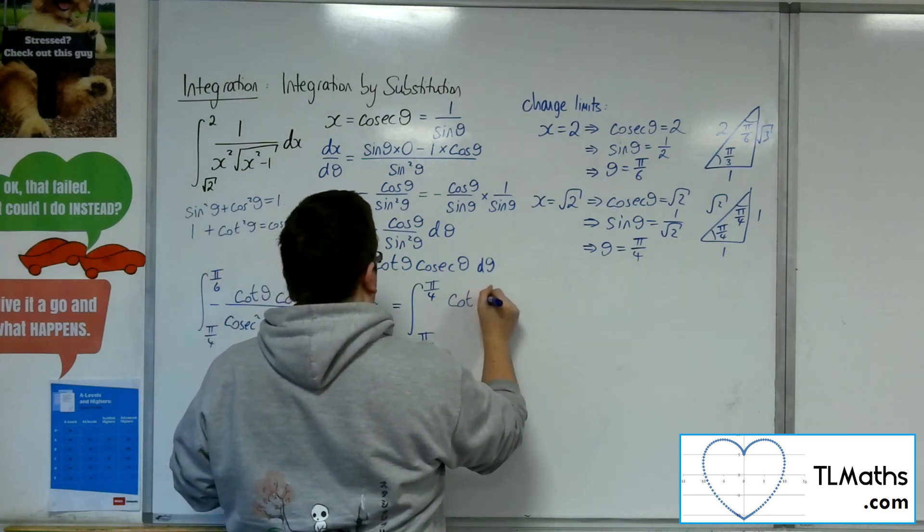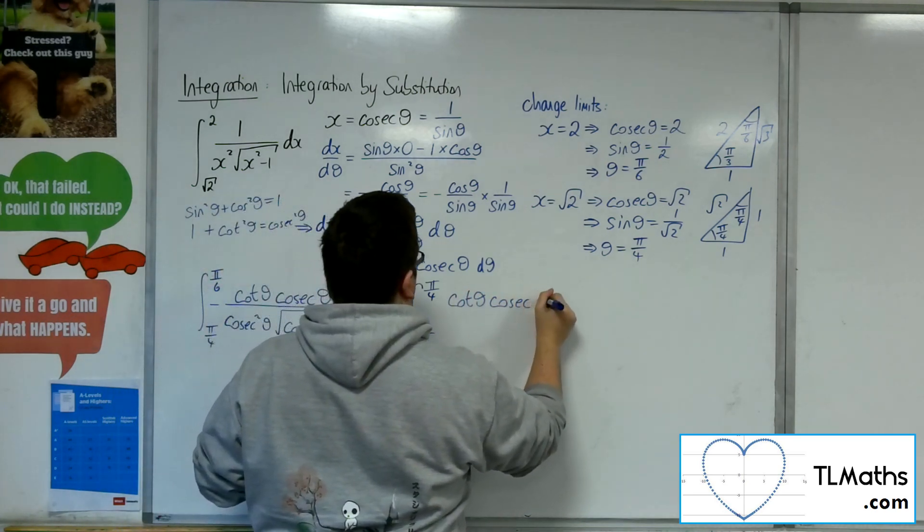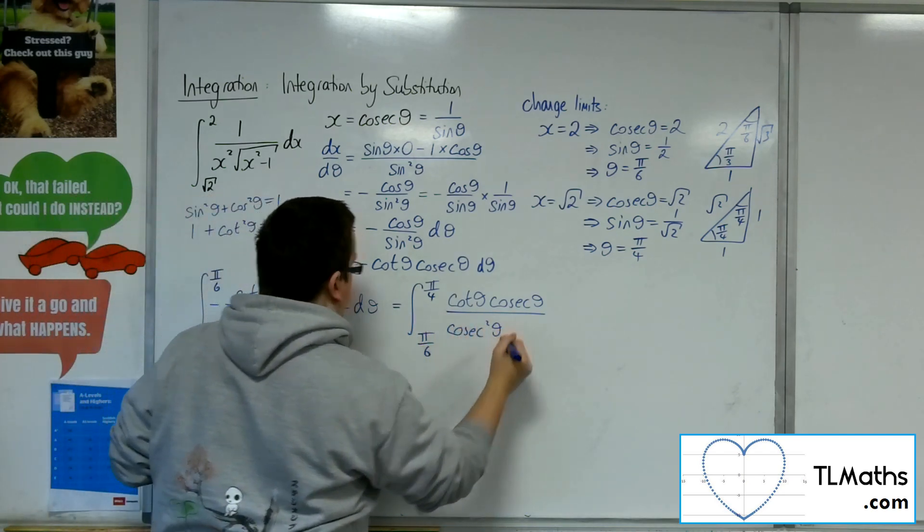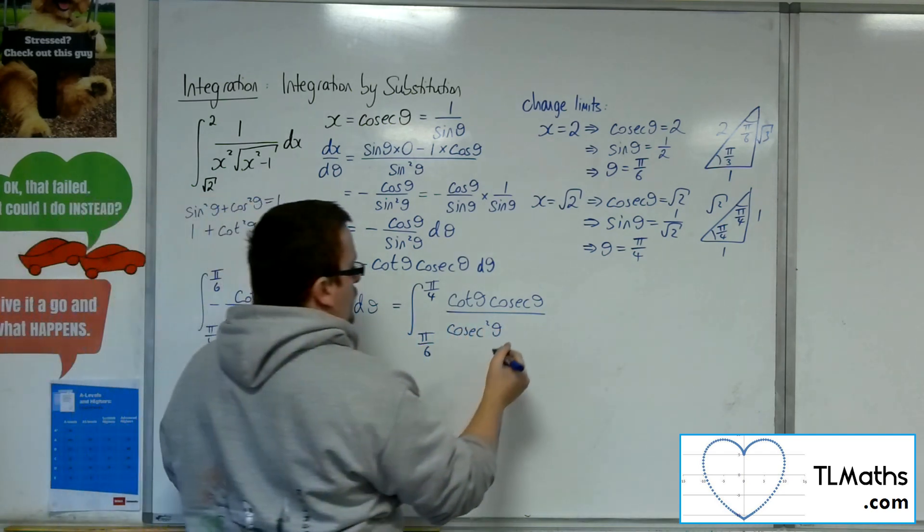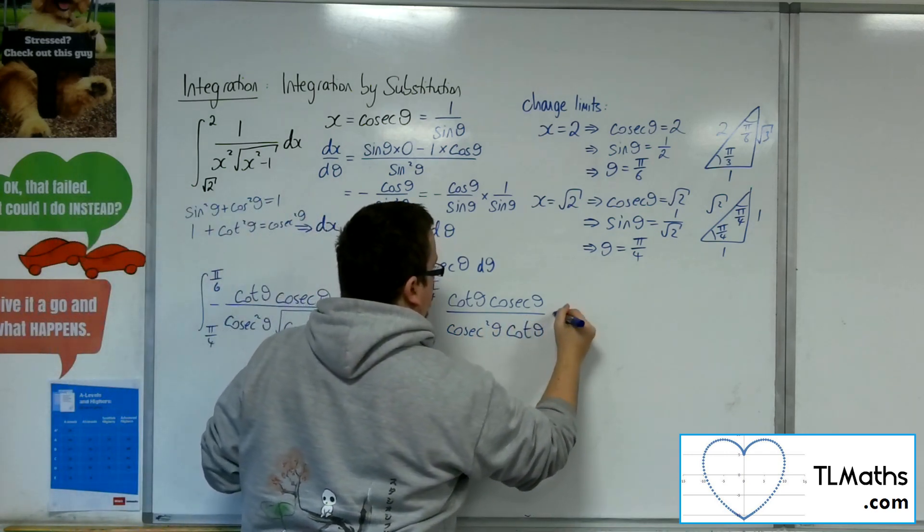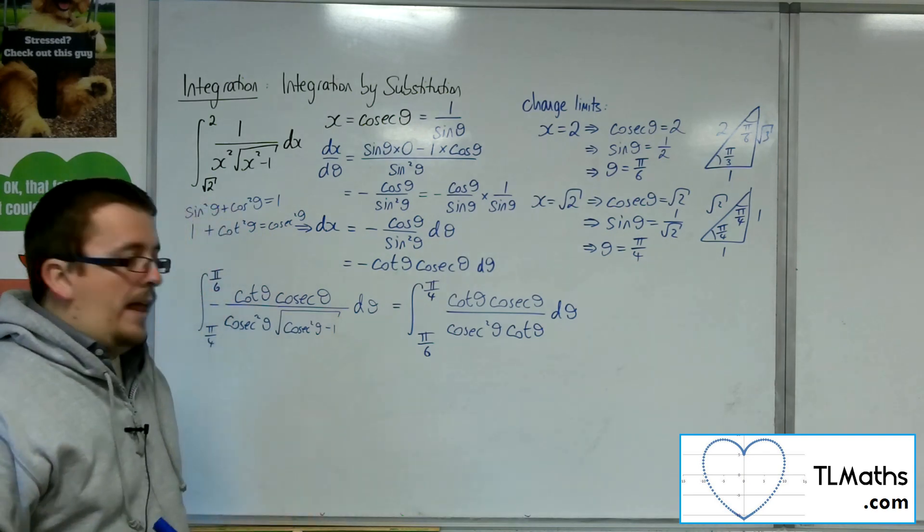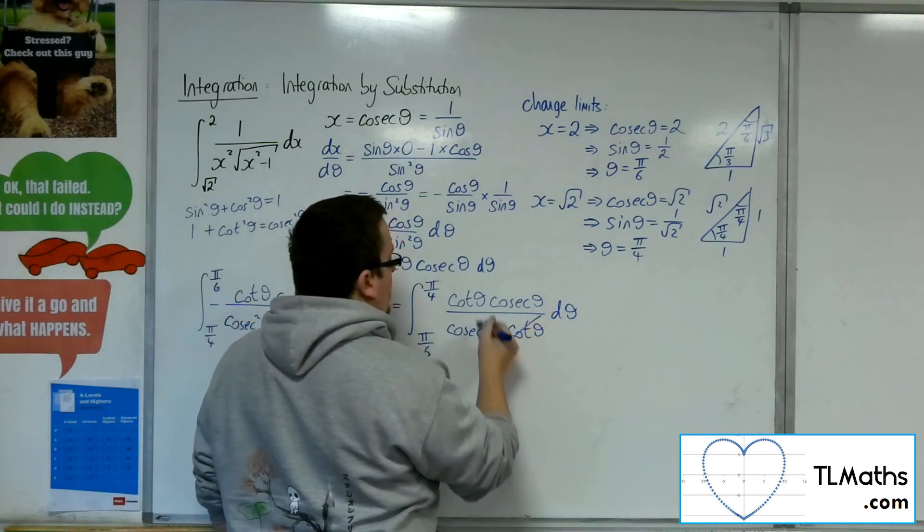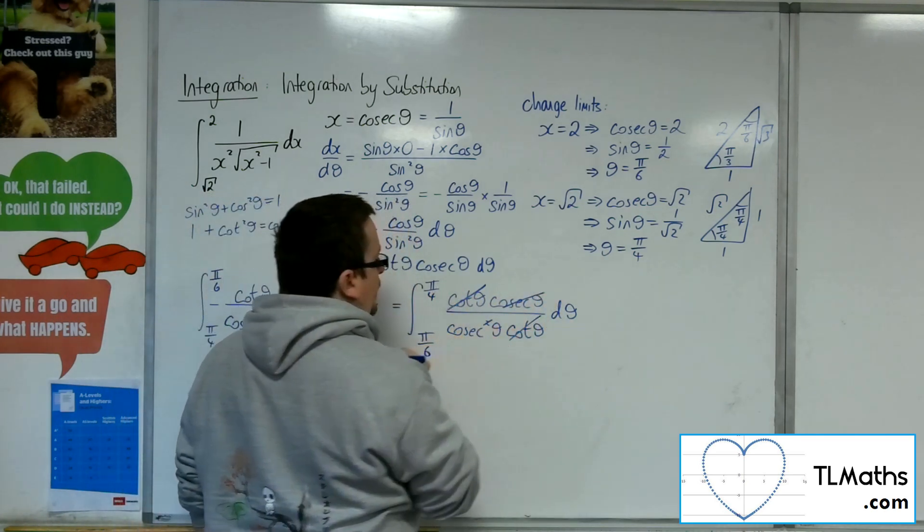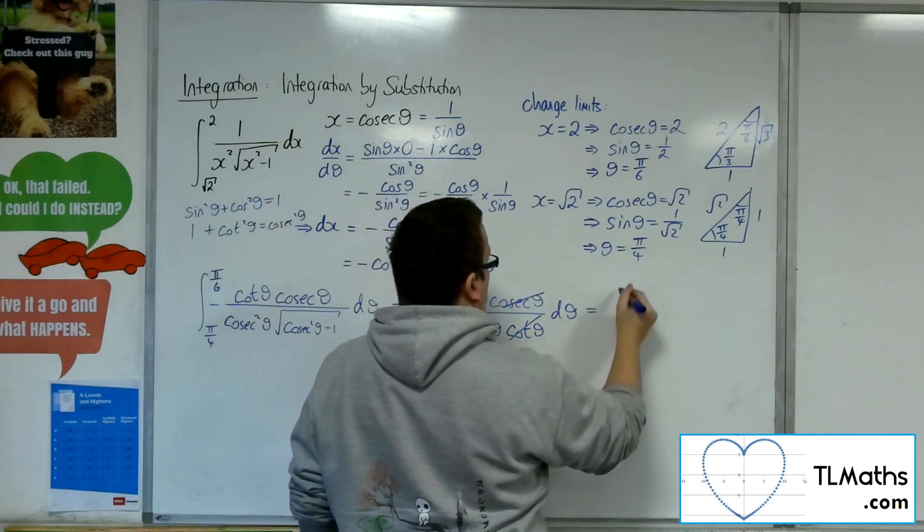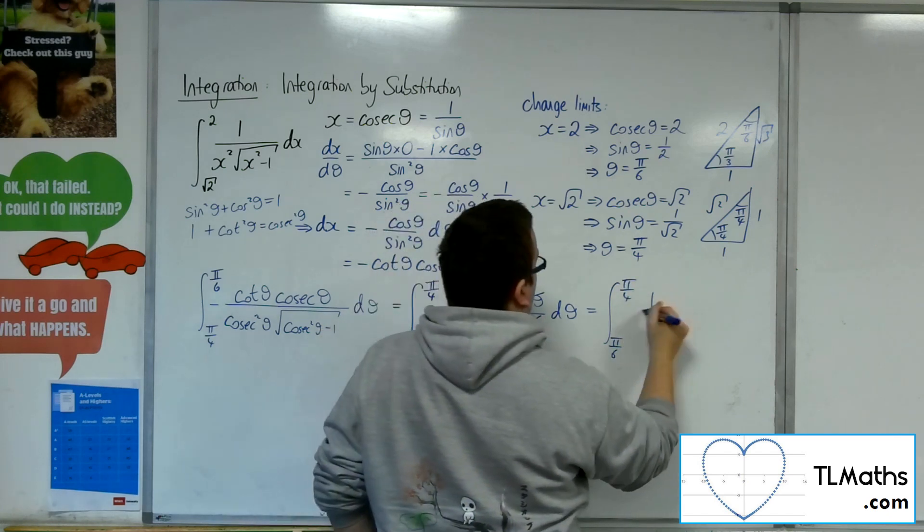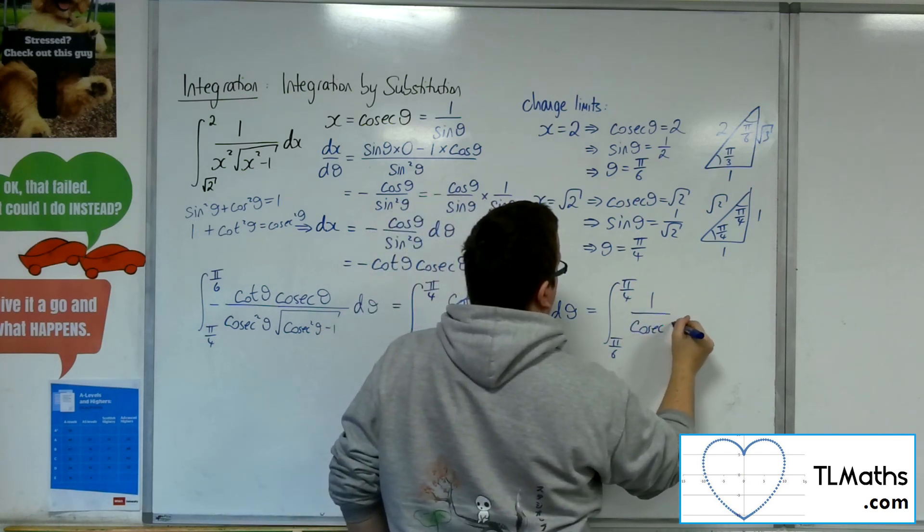So I've got cot theta cosec theta over cosec squared theta. And I've got the square root of cot squared. So just cot theta. So now I can spot some cancellations. Because I've got the cot theta, and the cot theta can cancel. I've got a cosec and a cosec there. So I've now got the integral between pi over 6 and pi over 4 of 1 over cosec theta d theta.